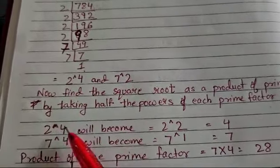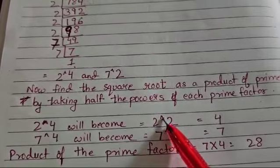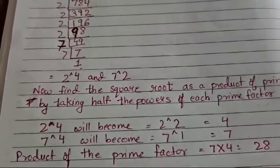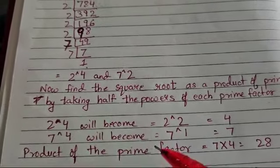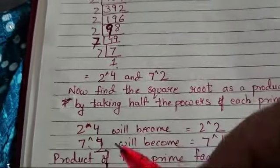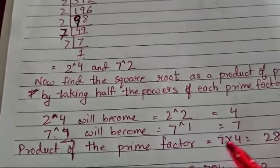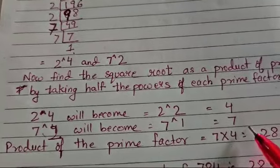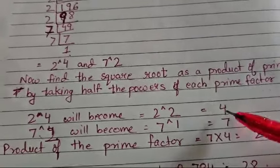So here the power is 4, it will be reduced to half, that is 2 to the power of 2, which gives you 4. Next is 7 to the power of 2. When we half it, it will be 7 to the power of 1, which gives us 7.